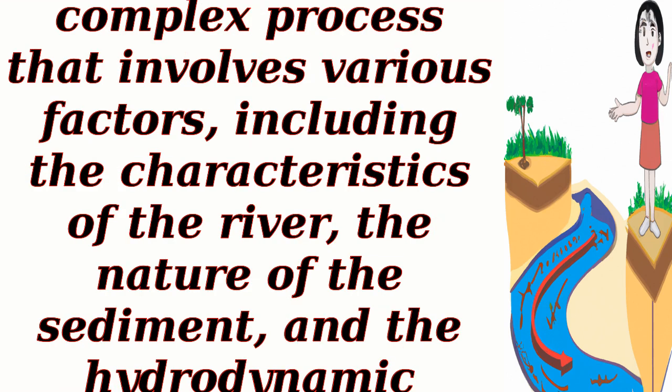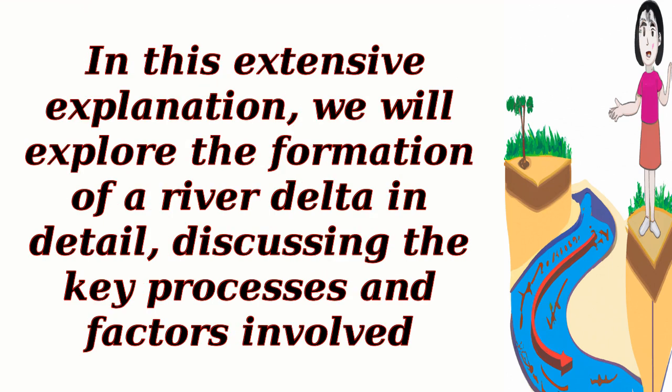The formation of a river delta is a complex process that involves various factors, including the characteristics of the river, the nature of the sediment, and the hydrodynamic conditions of the receiving basin. In this extensive explanation, we will explore the formation of a river delta in detail, discussing the key processes and factors involved.